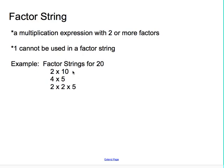We can compare factor strings by looking at how long they are. If we notice, this string has 2 factors, so its length is 2. This string has 2 factors, its length is 2. This string here has 3 factors in it, so we would say that its length is 3.